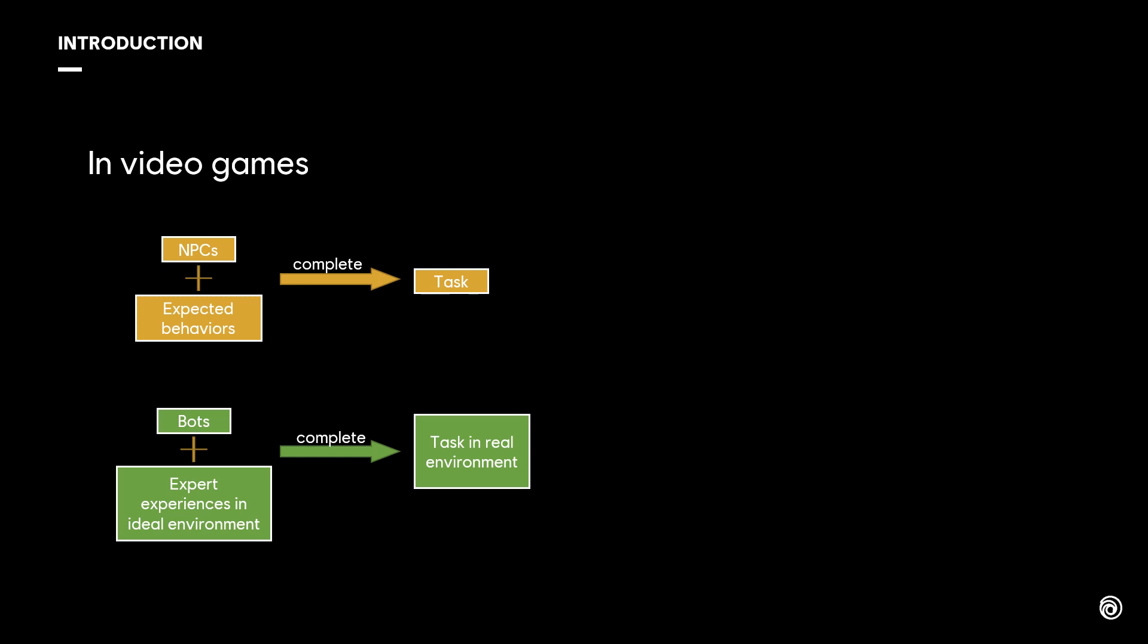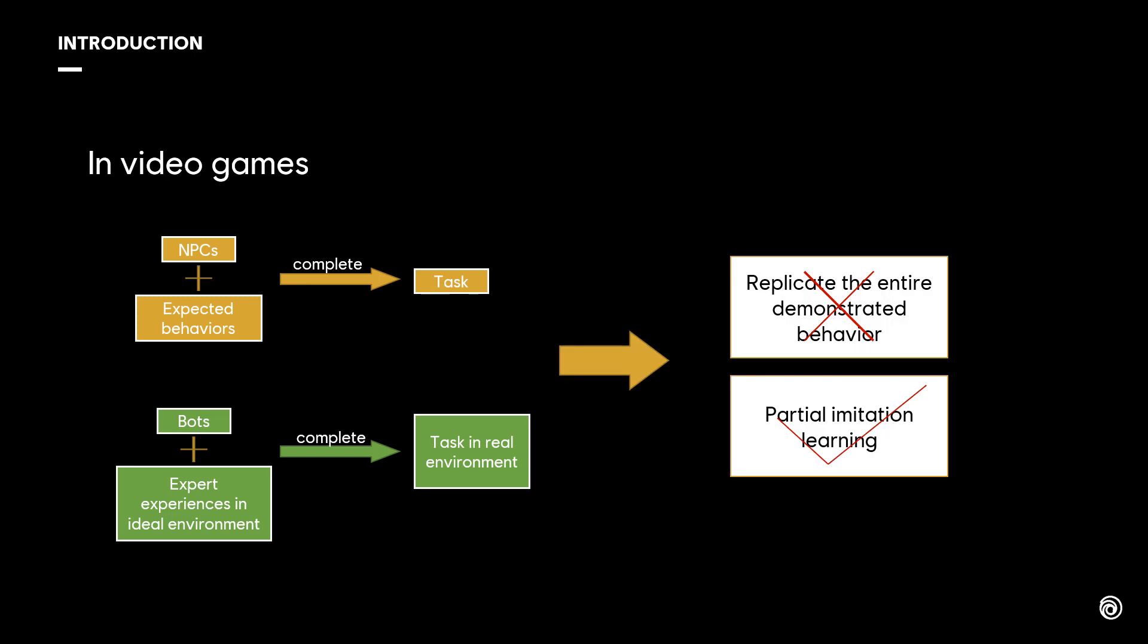Or we need bots that can apply expert experiences in ideal environments to real environments, to help them complete tasks as quickly as possible. The two requirements don't need agents to replicate the entire demonstrated behavior, but need to imitate it to varying degrees while completing a task.